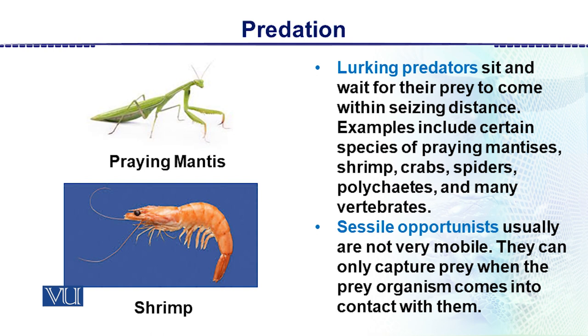Sessile opportunists are slow compared to lurking predators. They are fixed in place and are considered sessile opportunists — they wait for food to come to them.